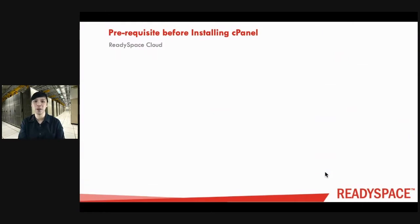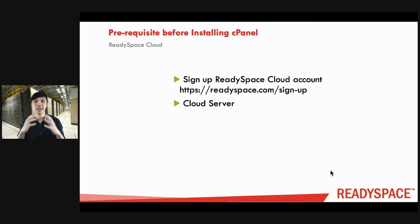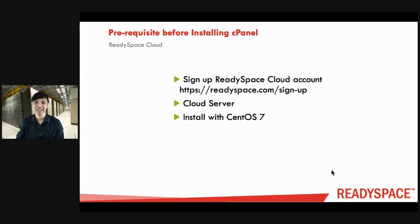There are some prerequisites you will need to know before installing cPanel. First, you should sign up for a ReadySpace cloud account through readyspace.com/signup. If you are not already a member, go to the order button, click on cloud server, and you will be able to see various options of cloud servers available. Within that server, choose to install CentOS 7. At this moment of recording, it is not available on CentOS 8, so do not install CentOS 8.